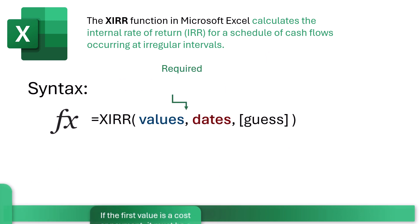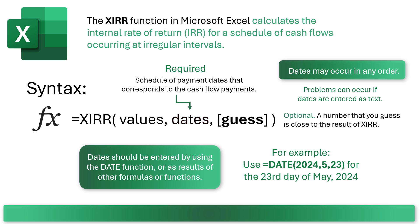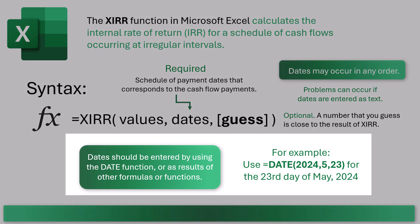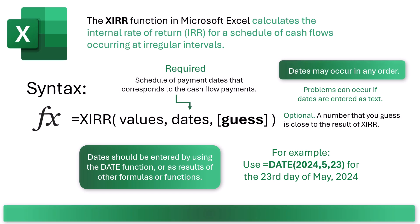Dates is another required argument — a schedule of payment dates that corresponds to the cash flow payments. With XIRR, dates can occur in any order. Dates should be entered by using the DATE function or as results of other formulas or functions. For example, you'd use equals DATE(2024, 5, 23) for the 23rd day of May, 2024.